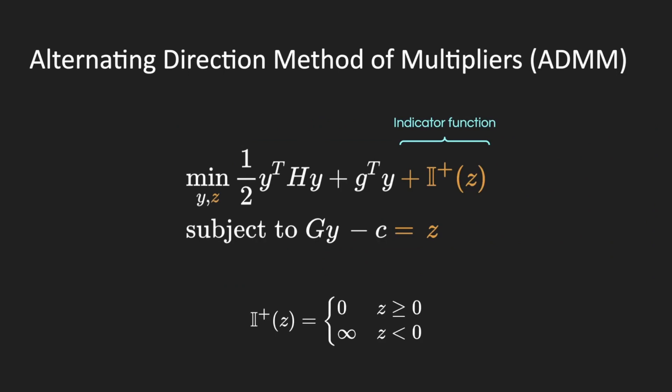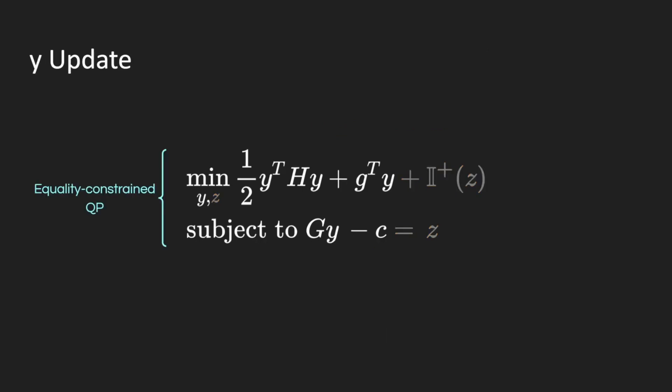This splitting lets us decouple the problem into alternating minimizations on y and z. The minimization on y is now an equality-constrained QP, which we solve using a matrix vector product with the inverse of a linear system, which RELUQP computes offline. The z update then becomes a projection to the positive orthant, which is equivalent to a rectified linear unit.